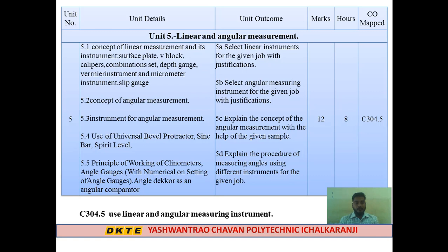Topics 5.3 and 5.4 cover further angular measurement instruments. Topic 5.5 covers the working principle of the clinometer and angle gauges — the clinometer is a highly sensitive and very accurate measuring instrument. The total marks for Chapter 5 are 12 marks with 8 lecture hours.